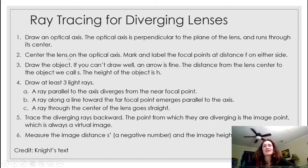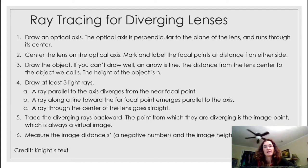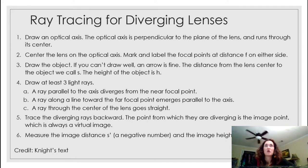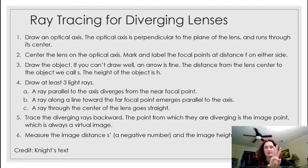Now let's go through the same process for a diverging lens, using Knight's tips. Step one: draw the optical axis perpendicular to the plane of the lens, through the center and both focal points. Step two: center the lens on the optical axis and mark focal points. Step three: draw the object using an arrow and label s and h.